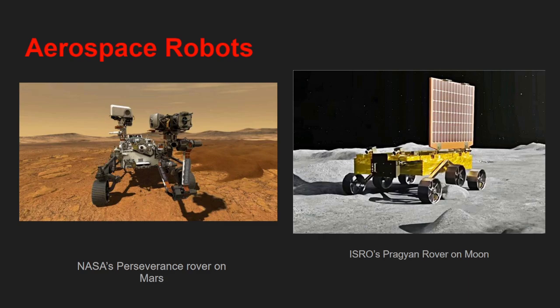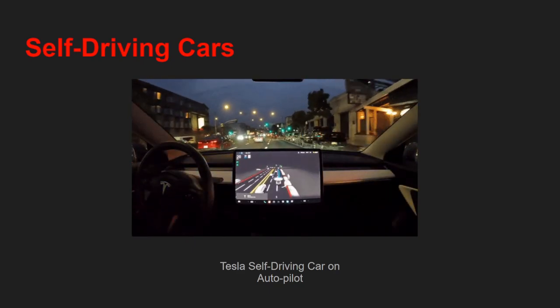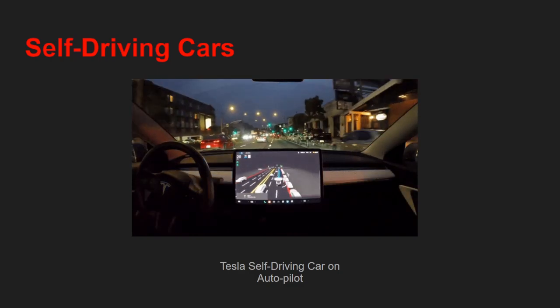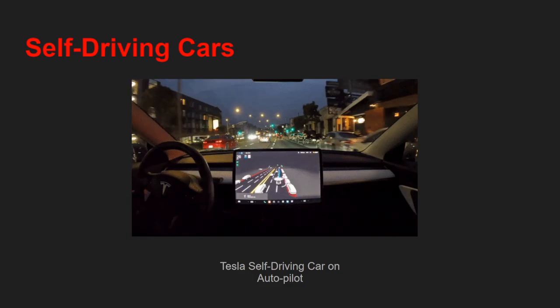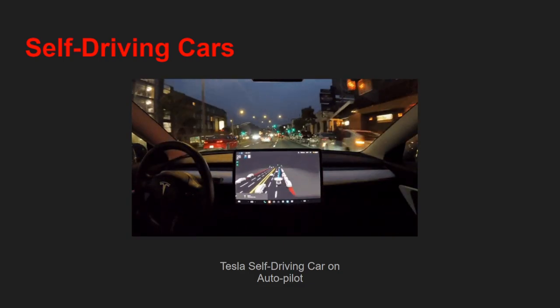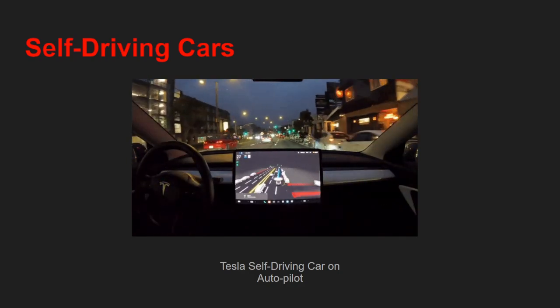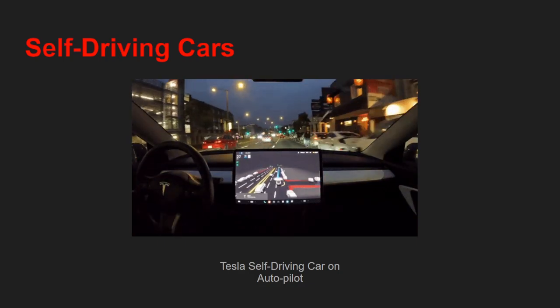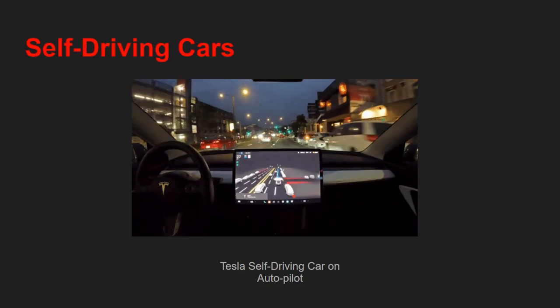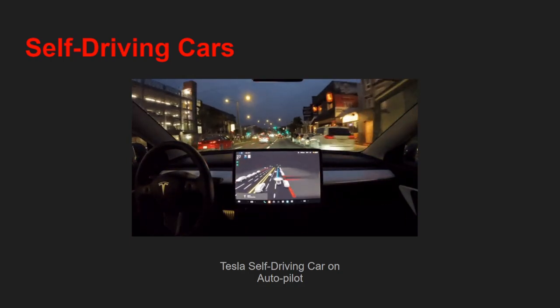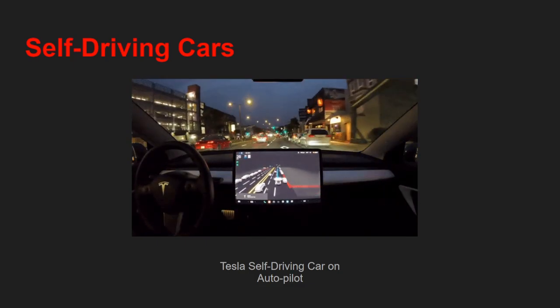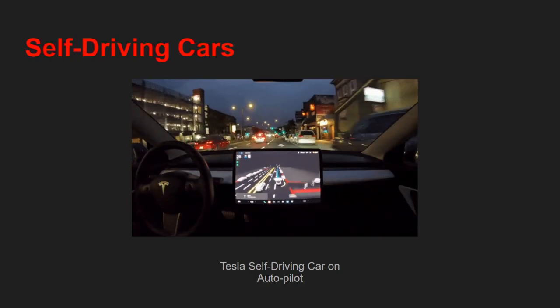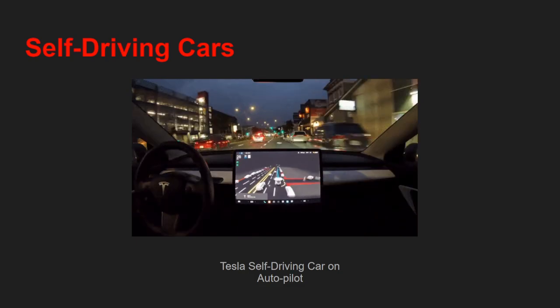These rovers not only help explore extraterrestrial bodies but also help humanity improve its scientific endeavors and technology. Regarding self-driving cars, Tesla's autopilot feature allows a car to run without human intervention. In Phoenix, Arizona, there are even taxis with no driver at all — you order a taxi, sit in the back, and it takes you to your destination.